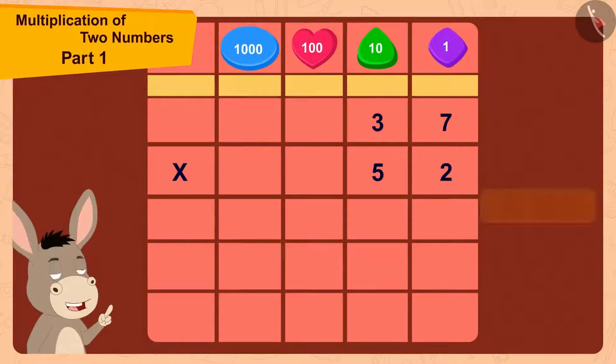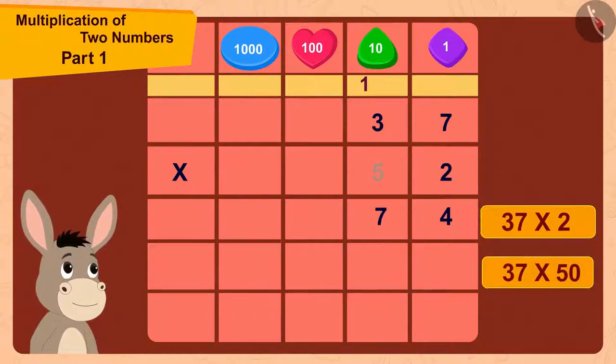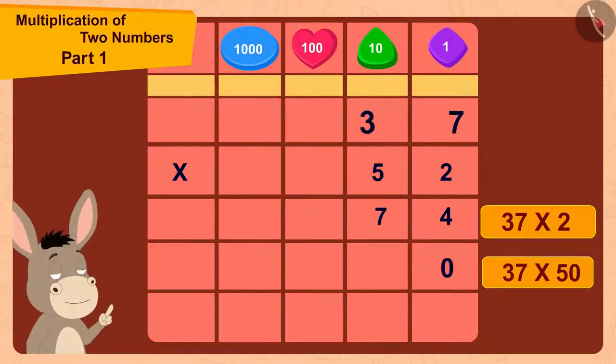37 multiplied by 2 is 74. Now, I will first write 0 here and then multiply 37 by 5.